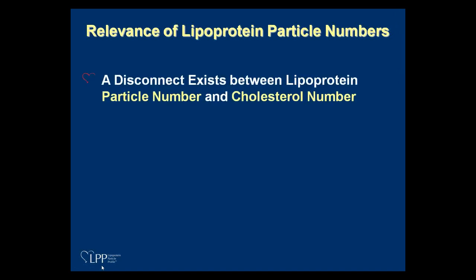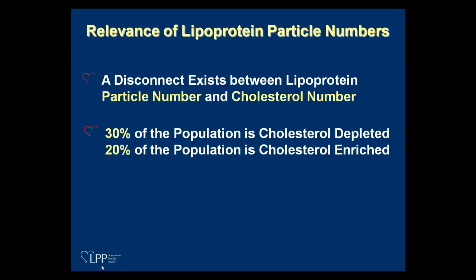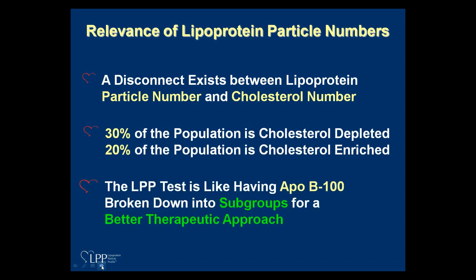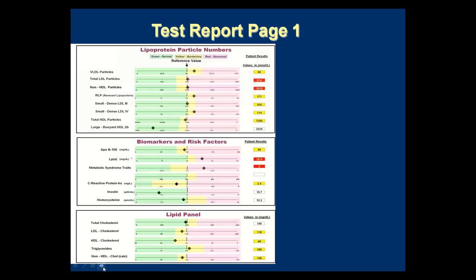About 30% of our population is what we'd call cholesterol depleted (or triglyceride enriched), and about 20% is cholesterol enriched. The LPP test is like having an ApoB value but broken down into subgroups, which allows the physician to better treat the patient. Our report has reference values in the middle and a sliding bar — if the diamond is on the right side, it's borderline or high, and it's color-coded for easy reading.